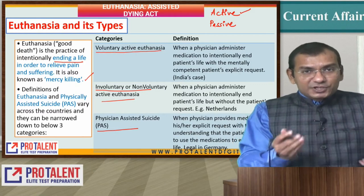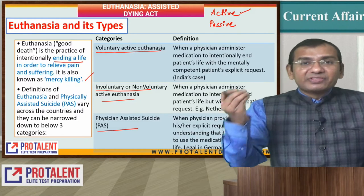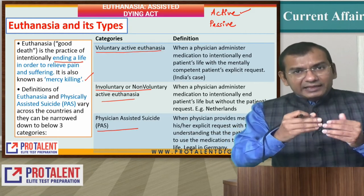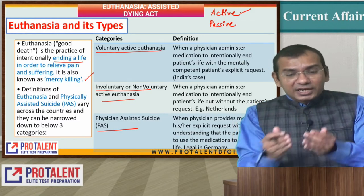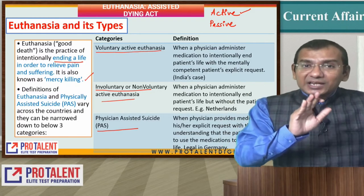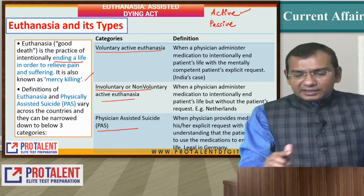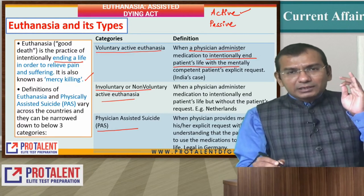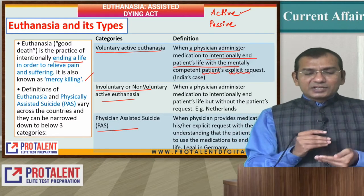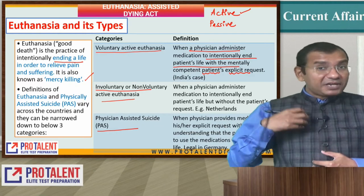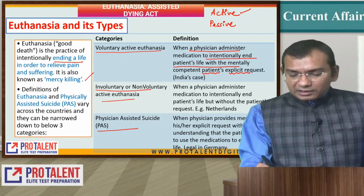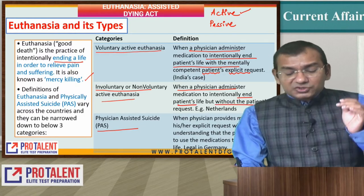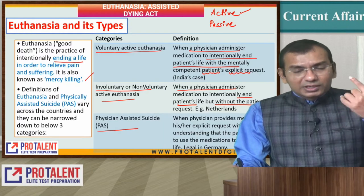When a physician administers medication to intentionally end a patient's life with the mentally competent patient's explicit request, that is called Voluntary Active Euthanasia — the patient himself gives this consent. When a physician administers medication to intentionally end a patient's life but without the patient's request, that is called Involuntary Active Euthanasia. In India we do not have Active Euthanasia; we only have Passive Euthanasia.